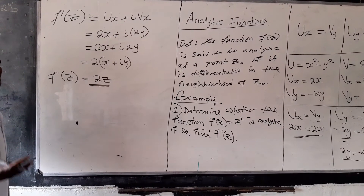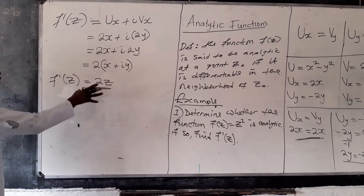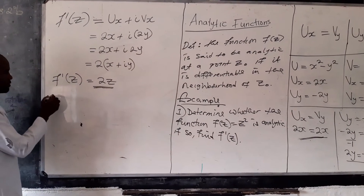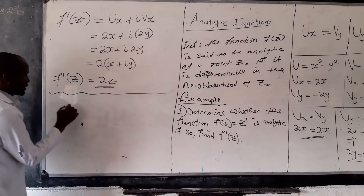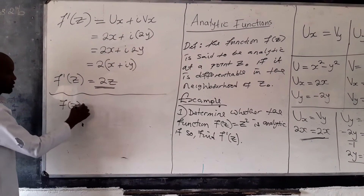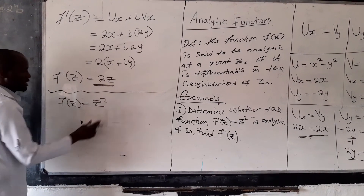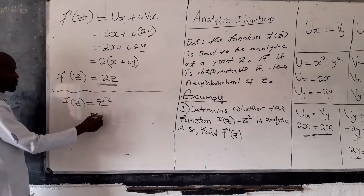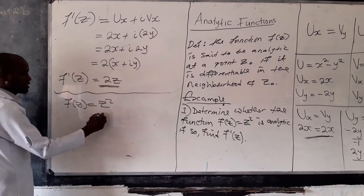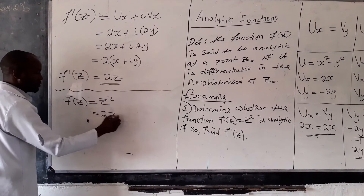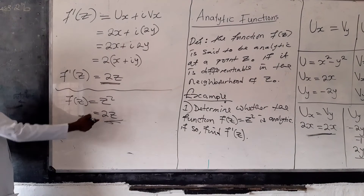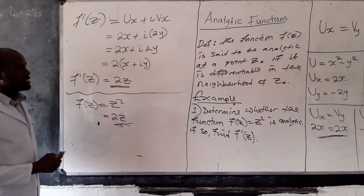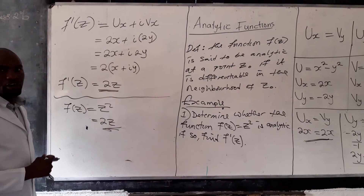Under basic calculus, we can verify this: our function was f of z equals z squared. Using the power rule, we drop the power and get 2z, which is the same result. So that is how you find the derivative of an analytic function — you first check whether it is analytic, and once confirmed, you find the derivative using the formula.